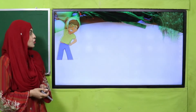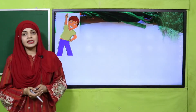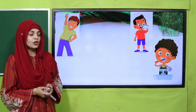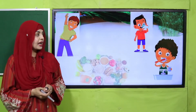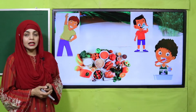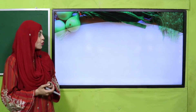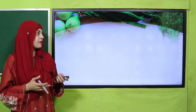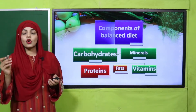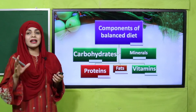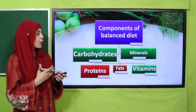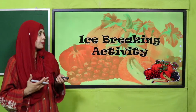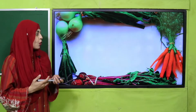Very nice. Taking exercise, drinking fluids, brushing your teeth twice daily, and consuming healthy food — these are all the ways to keep ourselves healthy. The components of a balanced diet are carbohydrates, proteins, minerals, lipids, fats, and vitamins.